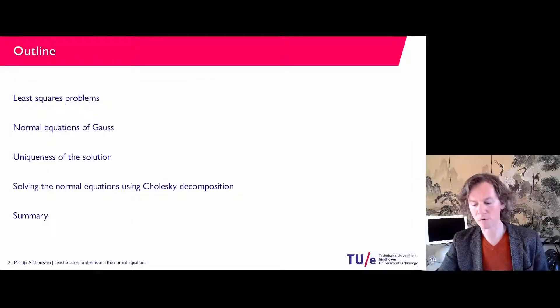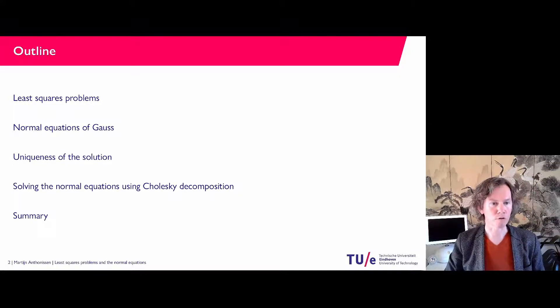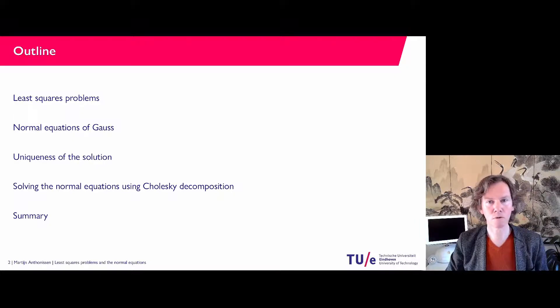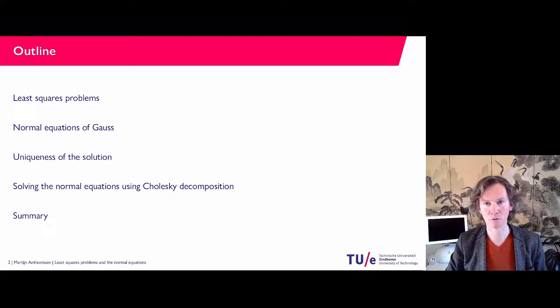Here is a short outline of what we will encounter in this video: first, some general remarks on least squares problems; then I will derive the normal equations of Gauss; I will study uniqueness; and I will show you how you can solve them. It will turn out that the system we get with the normal equations is symmetric and positive definite, and if you have a symmetric positive definite system you can use Cholesky factorization to solve it.